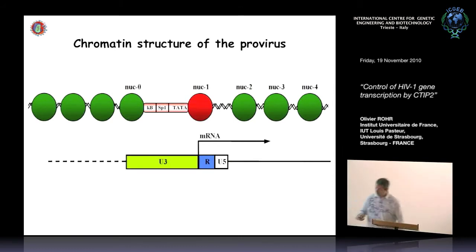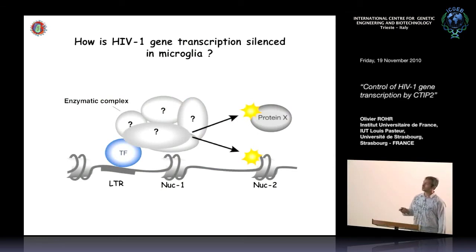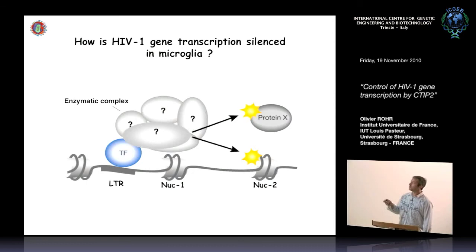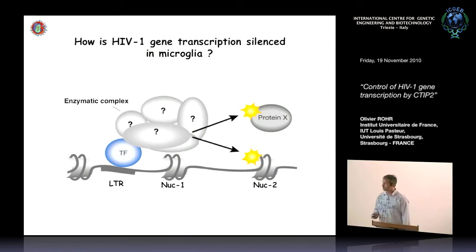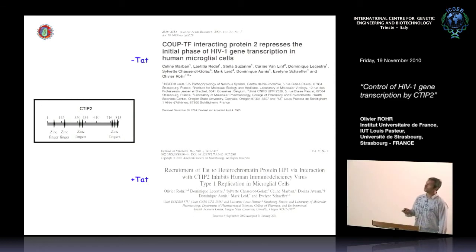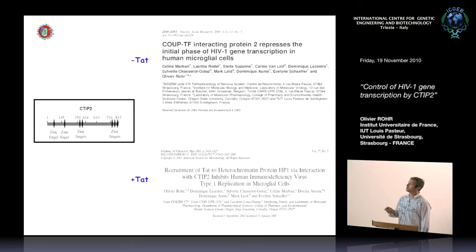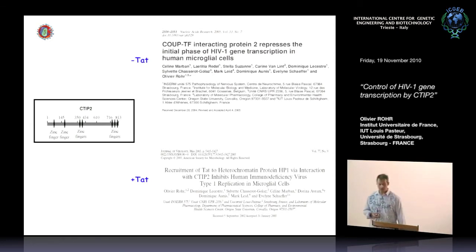We are interested in transcription factors and the enzymatic complexes they recruit that could induce the establishment of heterochromatin formation in microglial cells. Logically, we focused on HDAC and HMT activity. CTIP2, or COUP-TF interacting protein 2, was a good candidate — it is expressed in T cells and brain, we found it in cardiomyocytes, and we had previously published that CTIP2 can inhibit both the early and late phases of HIV-1 gene transcription.